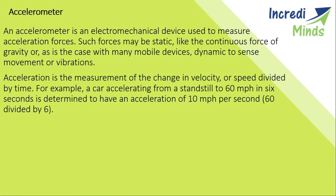An accelerometer is an electromechanical device used to measure acceleration forces. Such forces may be static, like the continuous force of gravity, or as is the case with many mobile devices, dynamic, to sense movement or vibration. Acceleration is the measurement of the change in velocity divided by time. For example, a car accelerating from a standstill to 60 miles per hour in 6 seconds is determined to have an acceleration of 10 miles per hour per second. This you must have learned in your physics classes.